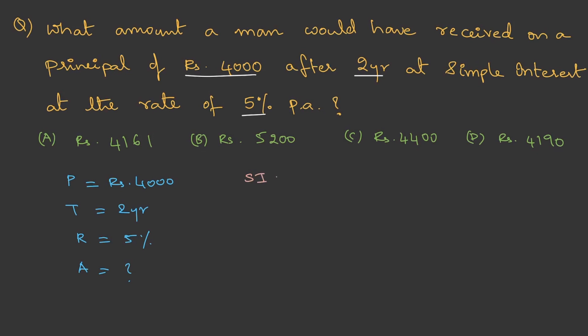We already know simple interest is PRT/100. That is 4000 × 5 × 2 / 100, which equals Rs. 400. Then amount is principal plus simple interest. That is 4000 + 400 = Rs. 4400. Therefore, the option is C.